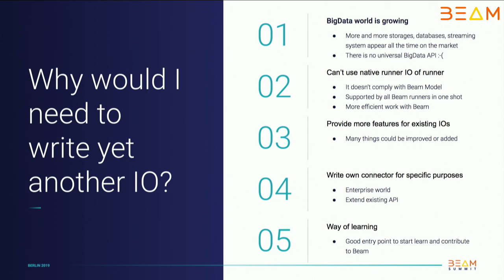The first reason could be that our big data world is growing — we still have more data storage and databases appearing on the market. Unfortunately there is no universal big data API we can use for every storage system, so we should add support for them into Beam. Also, we can't use a native I/O connector of your favorite runner in Beam because it usually does not comply perfectly with the Beam model — it will be supported only by one runner. But we want support for all runners, and if you run especially for Beam it will be more efficient. You may also want to add another feature for your favorite I/O connector.